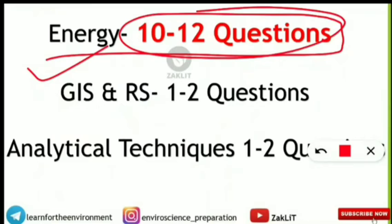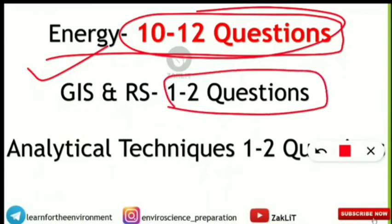From GIS and remote sensing, you will get one to two basic questions — covering microwave and infrared types of remote sensing, when microwave is used, and infrared for temperature and thermal analysis.